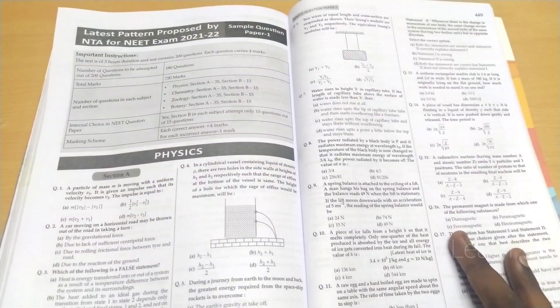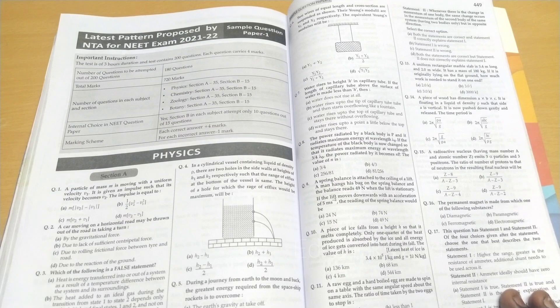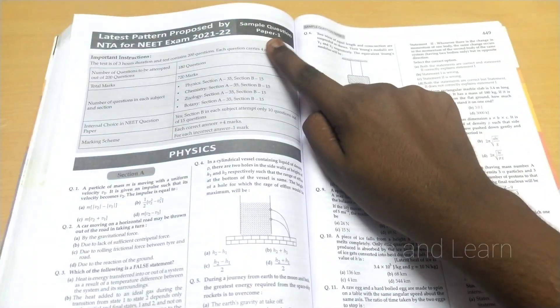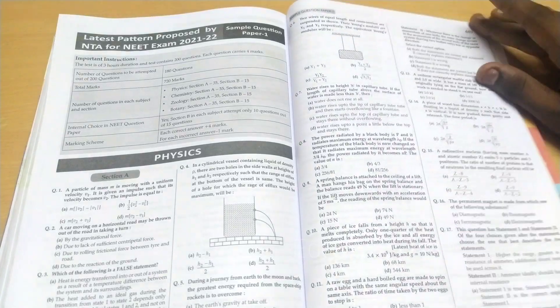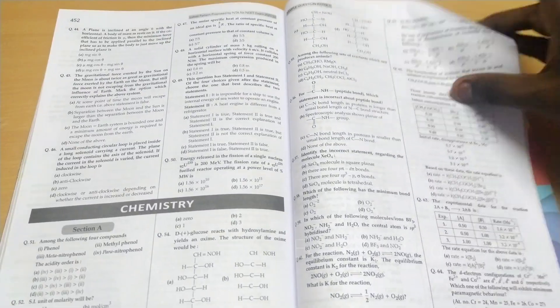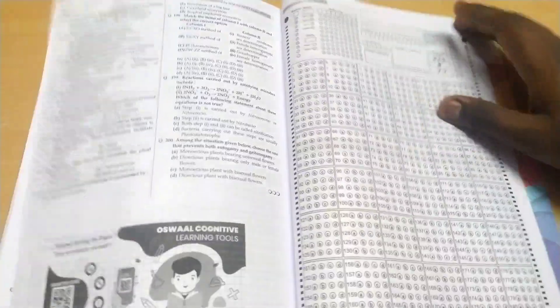At the ending of this book, they've given two sample papers with the latest pattern proposed by NTA. With that latest pattern, they've given Sample Question Paper 1. For the sample question paper, they've given physics, chemistry, and botany biology separate questions. There are no answers.